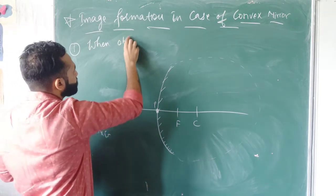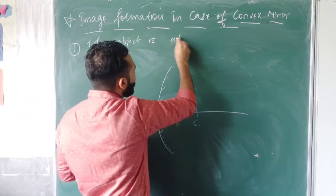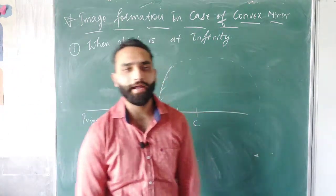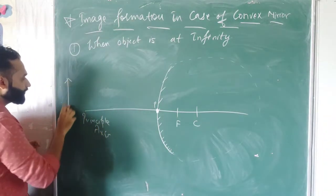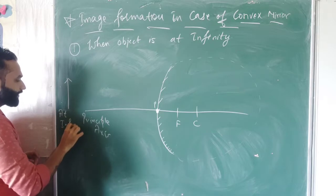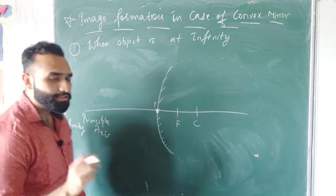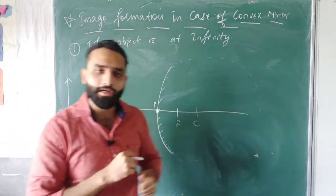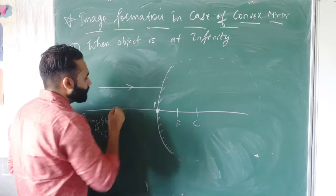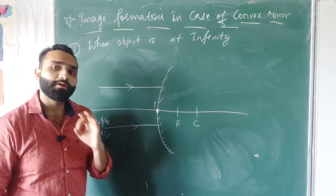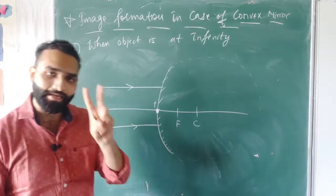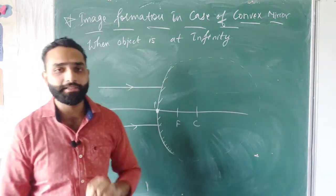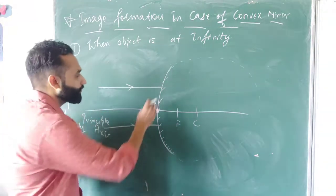First case: when the object is at infinity — very very far away. You know that when the object is at infinity, all the light rays come parallel to the principal axis. For image formation we need at least two rays, so we will work with two rays.